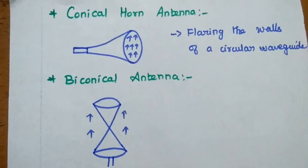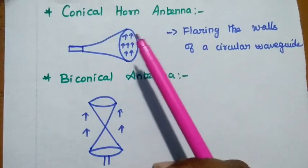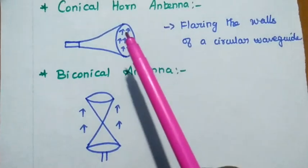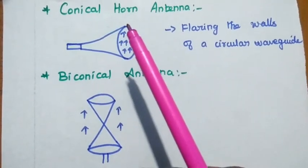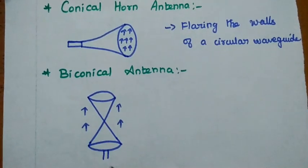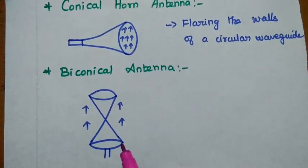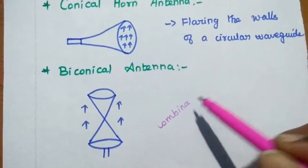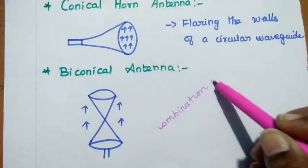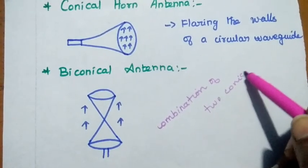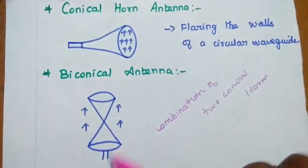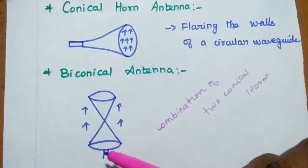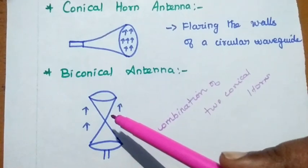The next type is the conical horn antenna, where the walls of a circular waveguide are flared — the end flares in a circular shape, so it looks like a cone. That is why it is called the conical horn antenna. The biconical horn antenna is a combination of two conical horn antennas, and it can radiate in two directions equally.